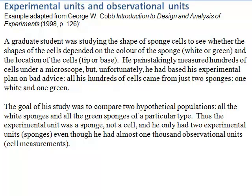Our first example comes from an excellent book on experimental design. The author is discussing a situation he had encountered. A graduate student was studying the shape of sponge cells to see whether the shapes of the cells depended on the colour of the sponge and the location of the cells. He painstakingly measured hundreds of cells under a microscope, but unfortunately he had based his experimental plan on bad advice.